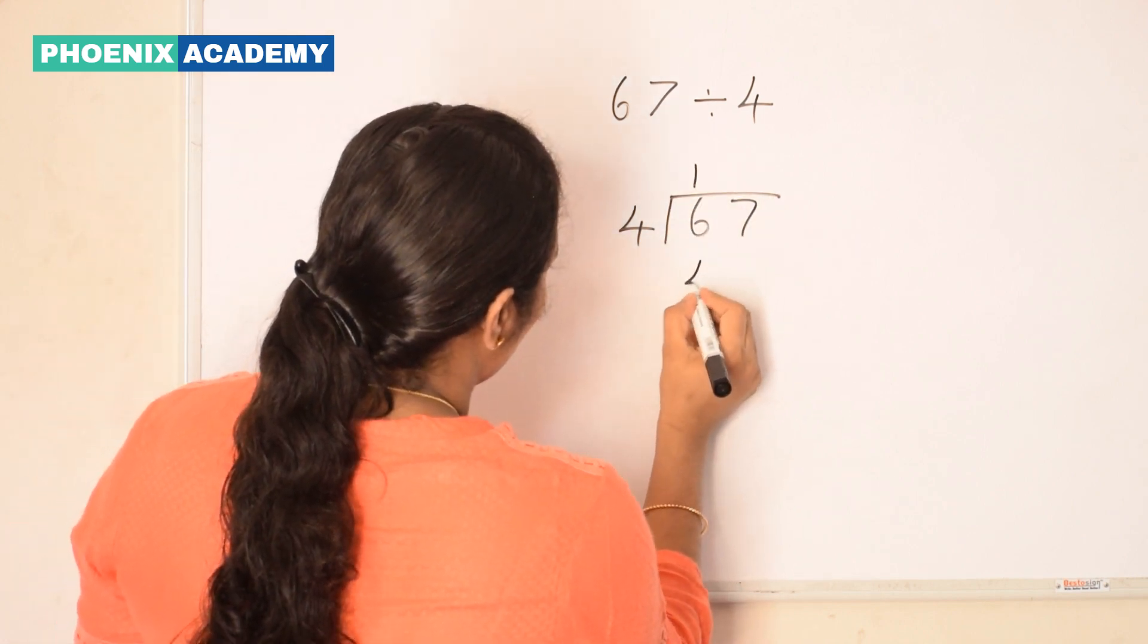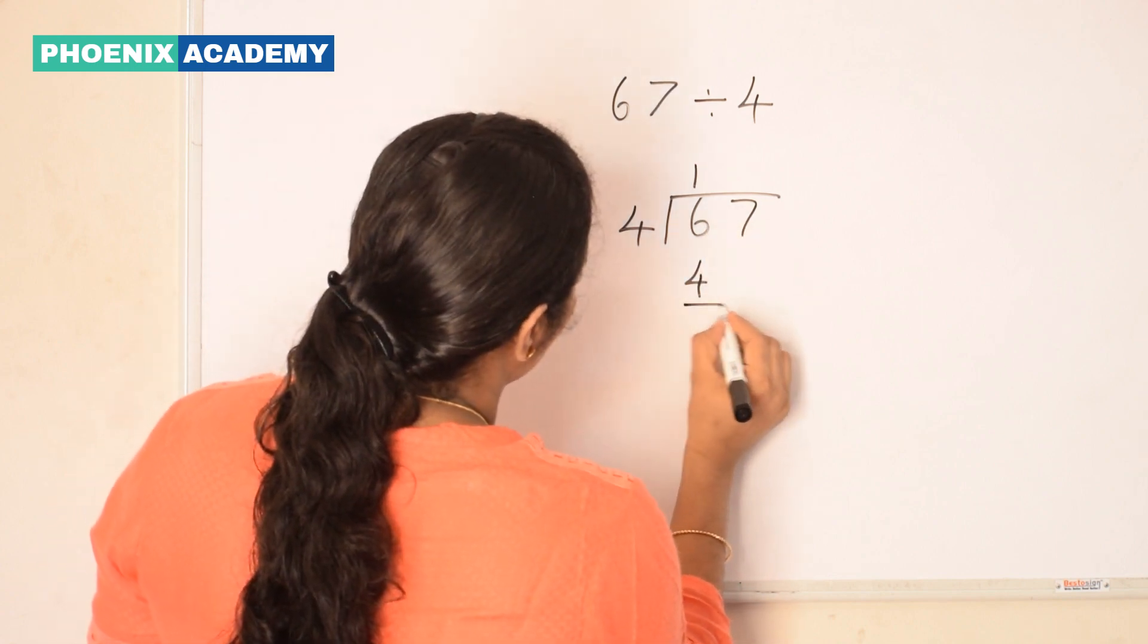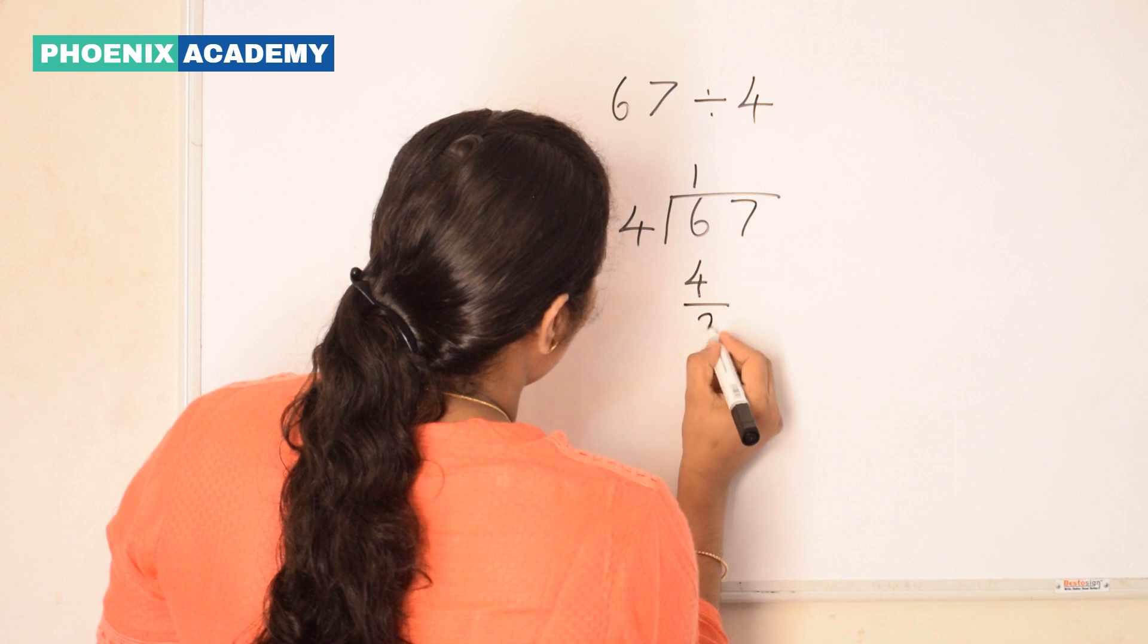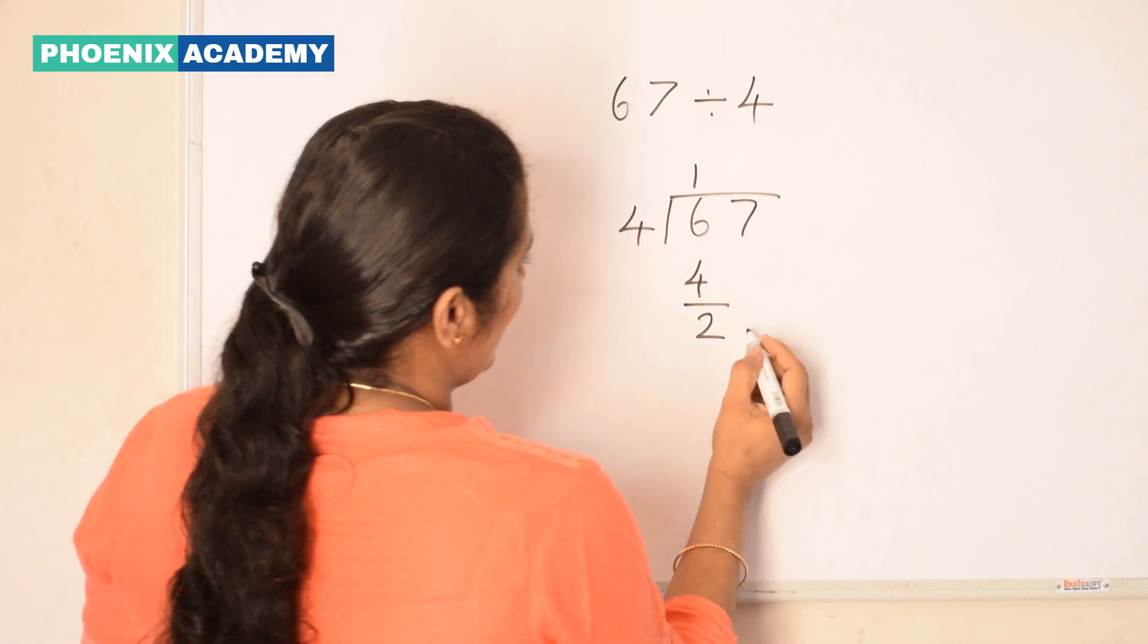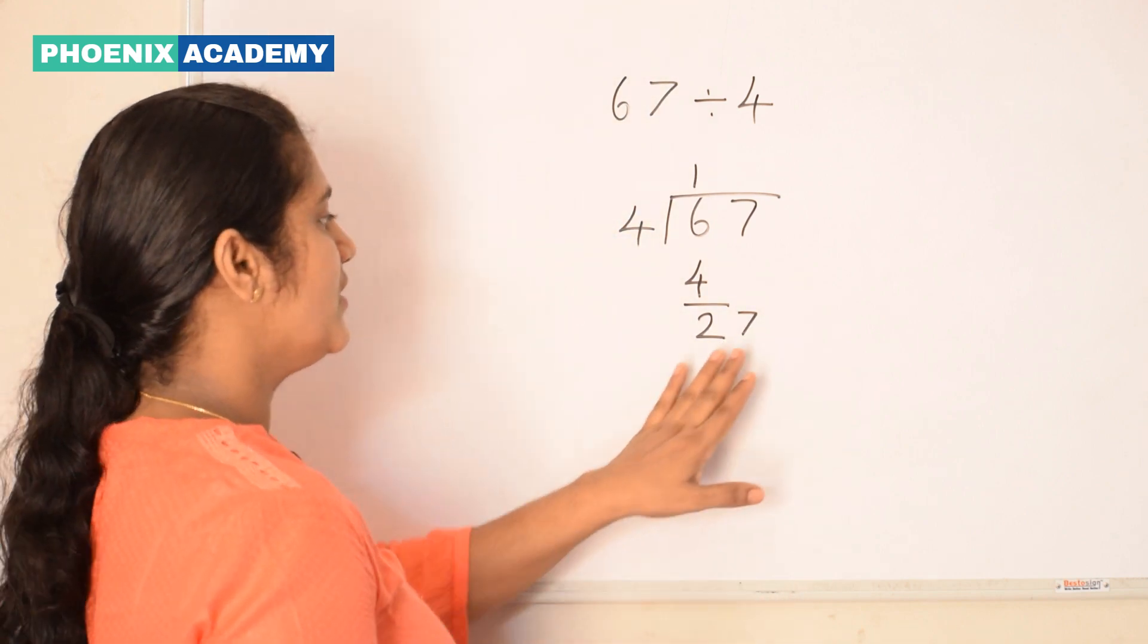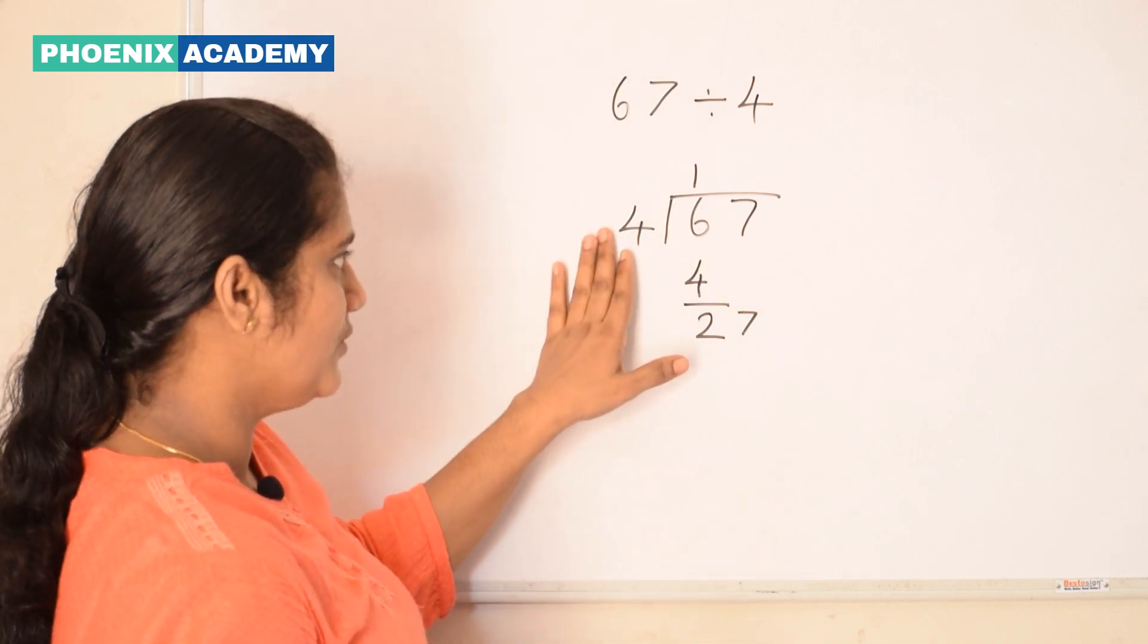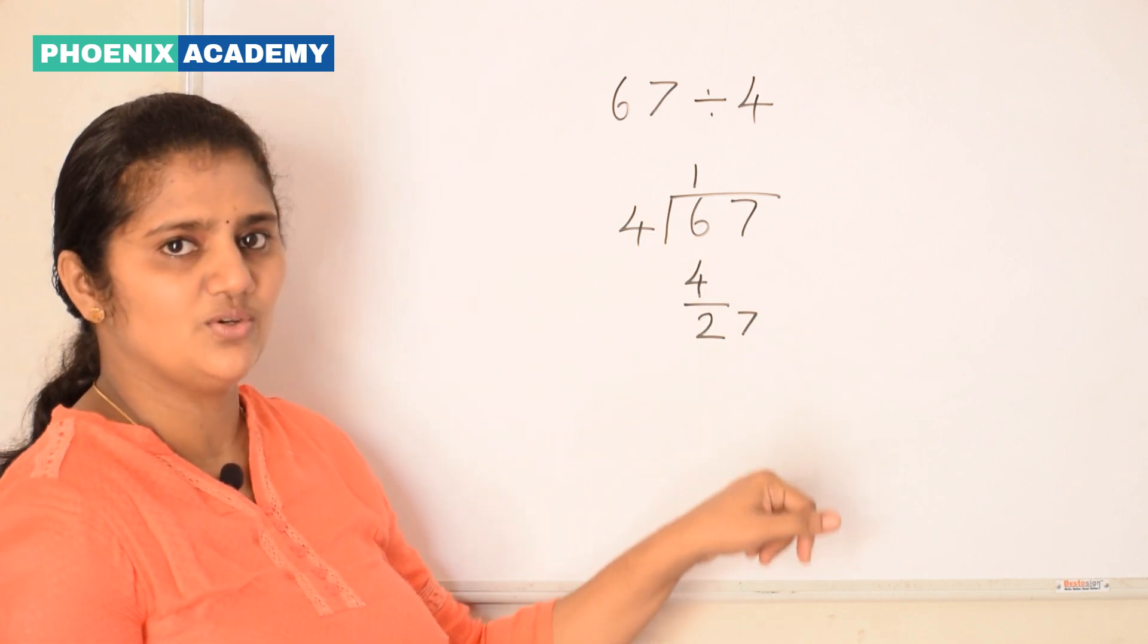1 four is 4. We write below the dividend and subtract 6 minus 4, we get 2. Then bring down the ones value. Then divide 27 by 4. We regroup 2 tens and 7 ones into 27.